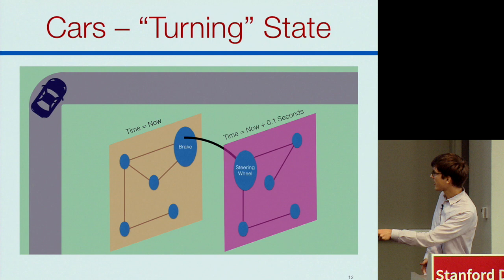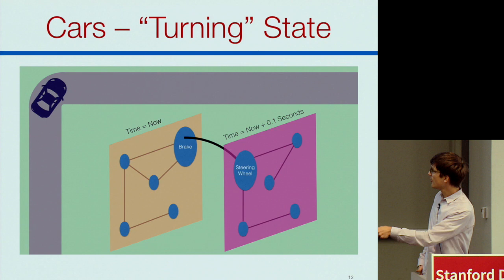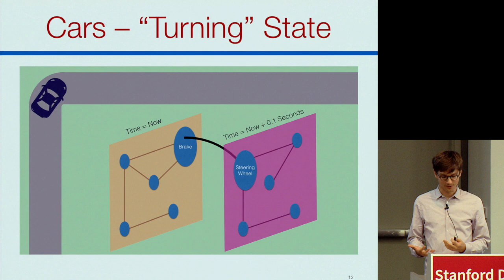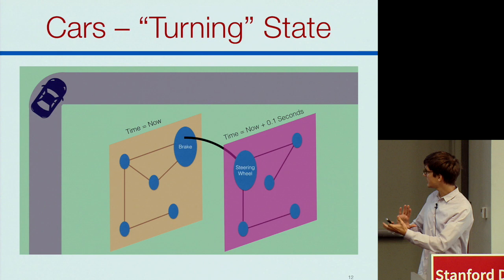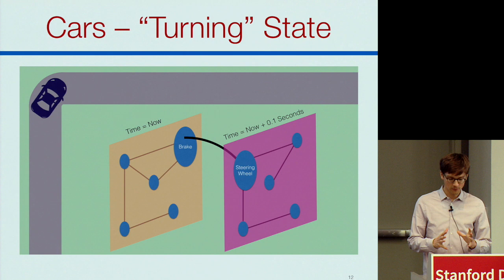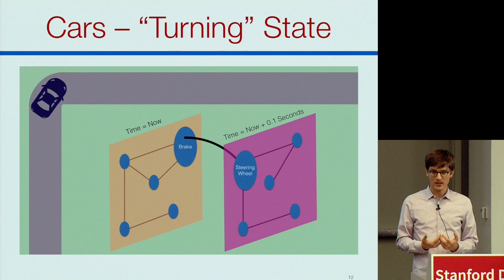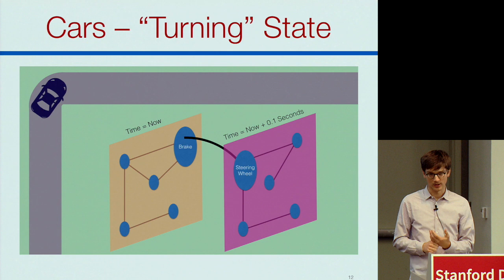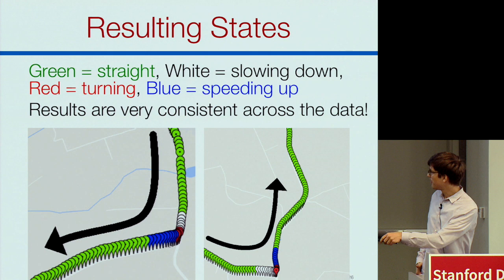One anecdote from this data: if a car is mid-turn, the position of the brake and the position of the steering wheel are intimately related in the current moment and a tenth of a second later — if they weren't, you'd be off the road. This allows us to discover networks of dependencies, both to understand and describe states, and to capture how people drive. For a self-driving car, you could use this to say: I want you to drive like a human — here is how a human drives.